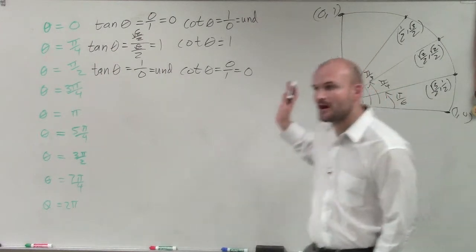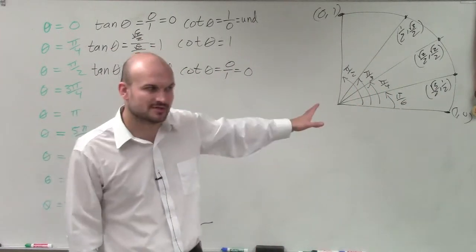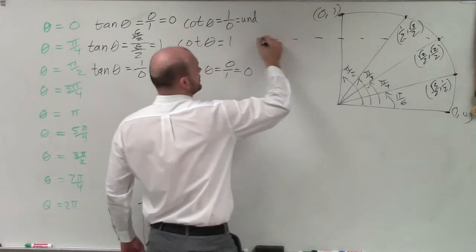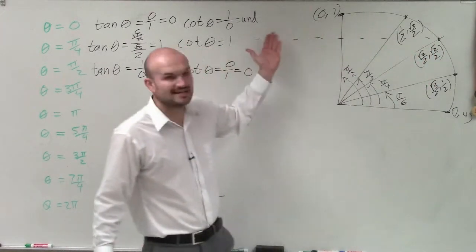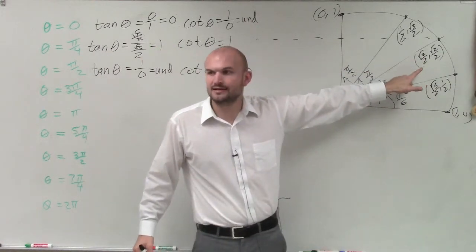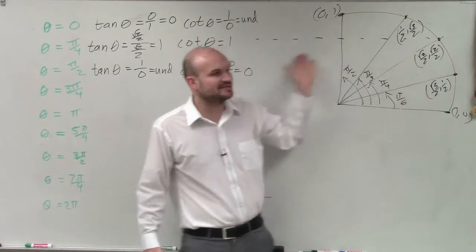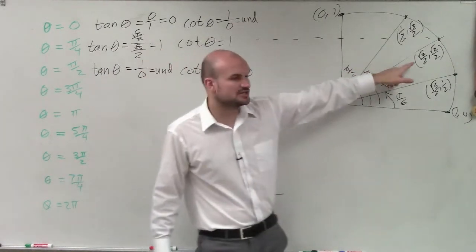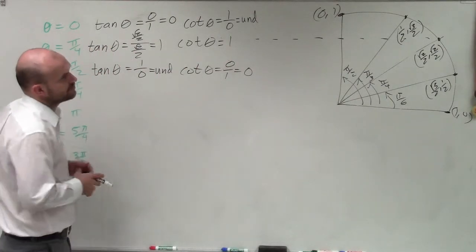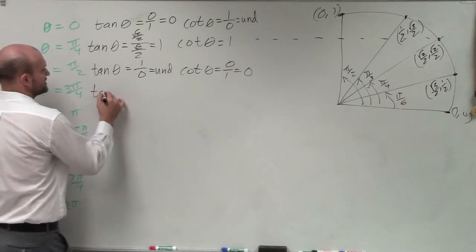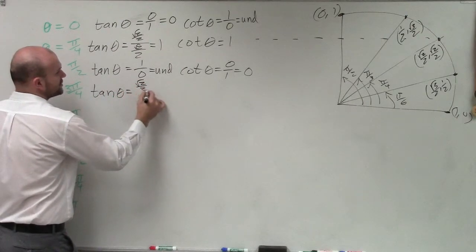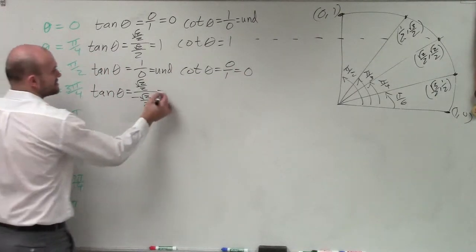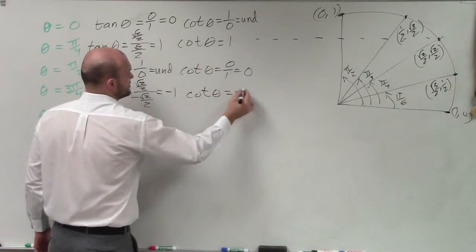Now let's get into 3 pi over 4. That is not in my first quadrant — 3 pi over 4 is in the second quadrant, and it's just pi over 4 reflected into the second quadrant. In the second quadrant, the x-coordinate is negative. So this point for 3 pi over 4 is square root of 2 over 2 divided by negative square root of 2 over 2. Therefore, the tangent of theta equals negative 1, and the cotangent — the reciprocal of that — is still going to be negative 1.